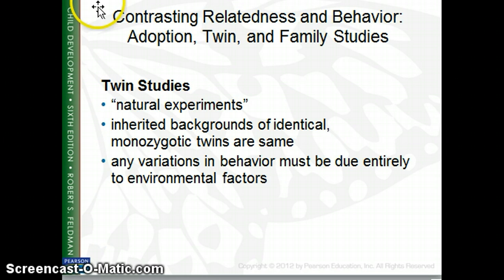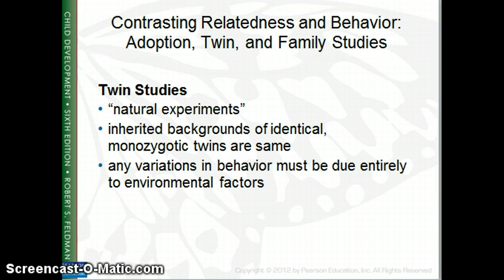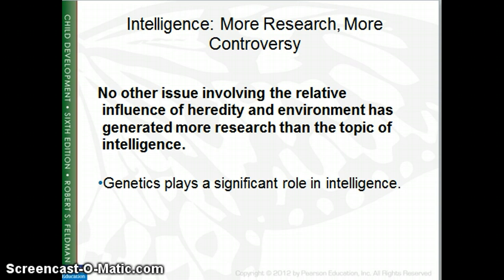Twin studies are another method used to look at biological differences versus environmental differences, often comparing identical or monozygotic twins to dizygotic or fraternal twins and thinking about whether differences are related to biology or environment. For example, if you had information about an adopted child's birth parents, chances are that the adopted child's IQ and intelligence would be closer to their biological parents than to their adopted parents.